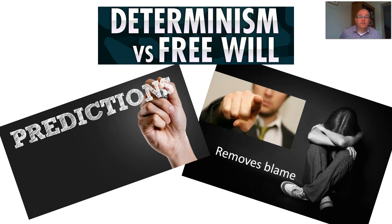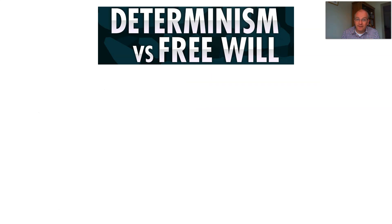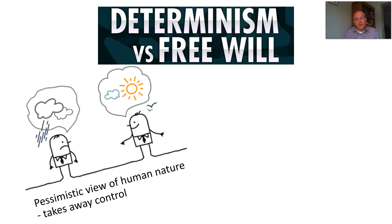There's also the idea of blame. Because something has determined what you have done — whether it's biology, environment, or the unconscious — you cannot be blamed for what you do. This can be a good thing: if you know somebody who suffers from severe mental health issues, nothing is worse than someone saying 'pull yourself together, get a grip' when they simply cannot do that. Determinism removes that blame, and that helps them. Whereas free will would say there is some blame here.